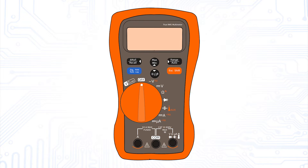In addition, as mentioned before, you can perform connection tests with almost any multimeter. On most multimeters, all symbols are quite self-explanatory. For instance, if you want to measure DC quantities, you select the symbols marked with straight lines. For AC quantities, you select those marked with a wavy line.